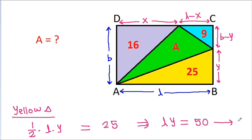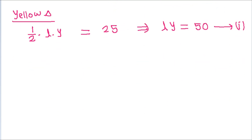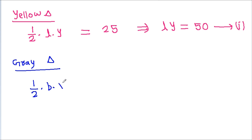Now if we consider the gray triangle, its area will be half times B times X, which equals 16. So from here we get B times X is equal to 32. Let's call this equation 2.